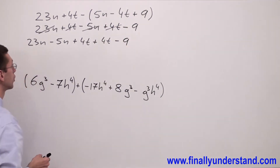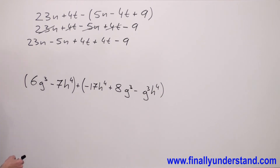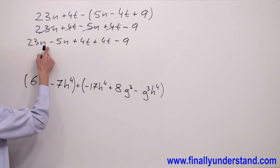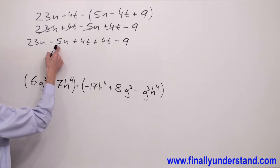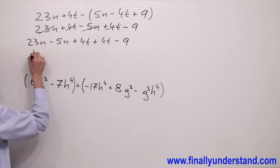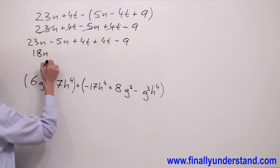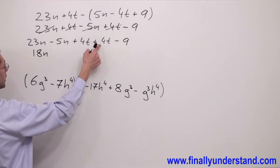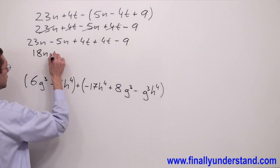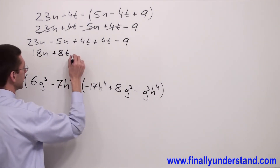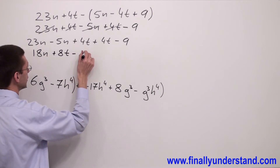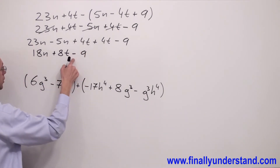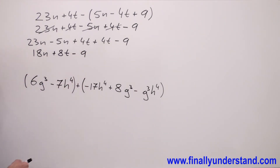Next, I have to combine the like terms. 23n minus 5n is 18n. 4 plus 4 is 8, so 8t. And negative 9. This is the solution to my first problem.